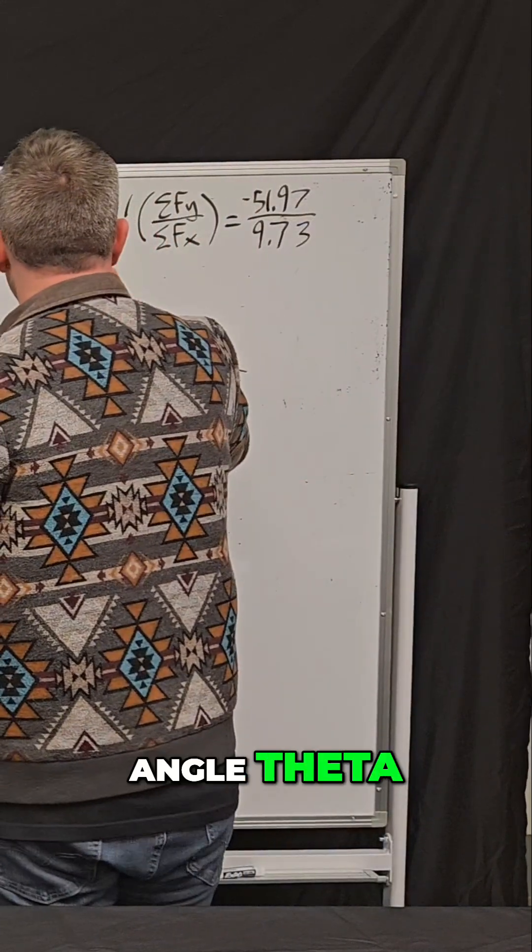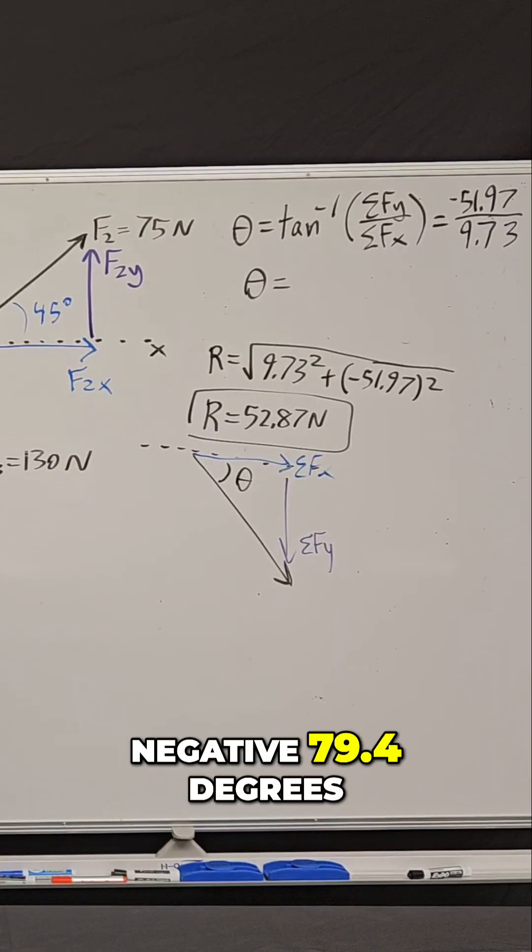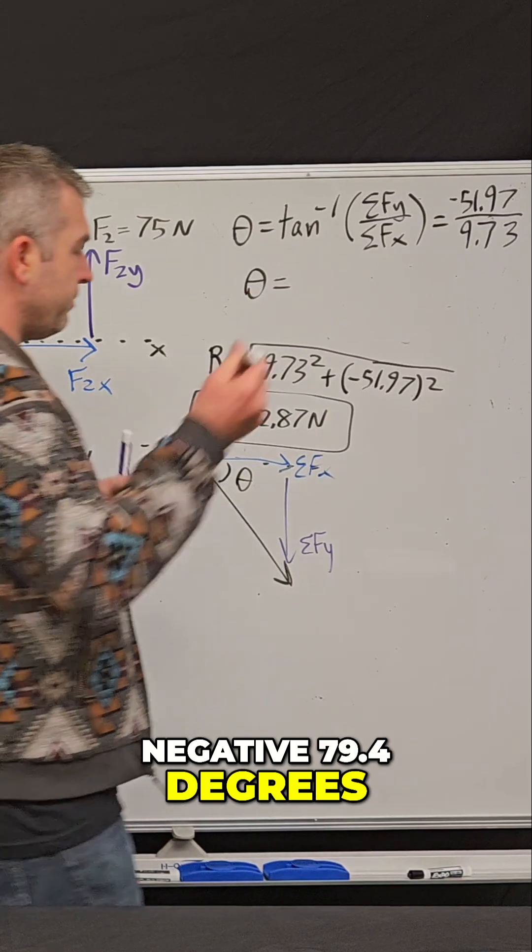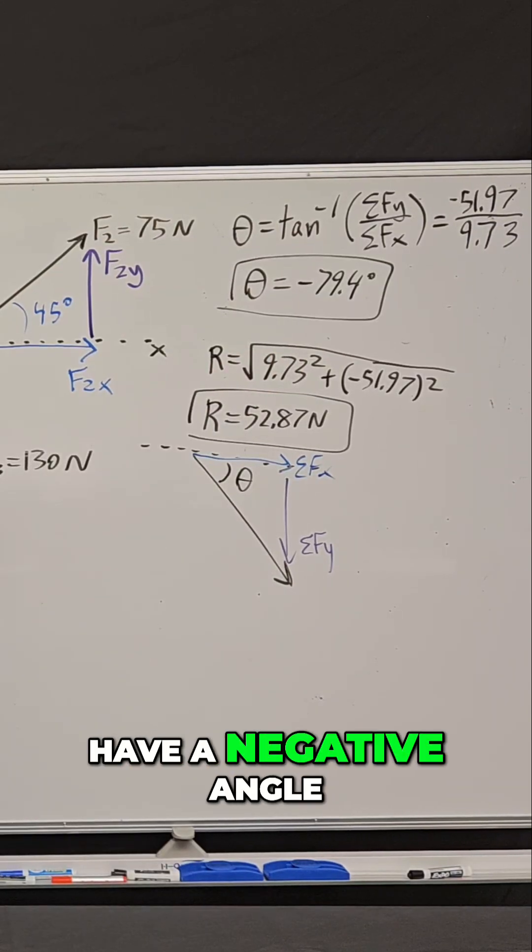And so this angle theta is negative 79.4 degrees. What does it mean to have a negative angle?